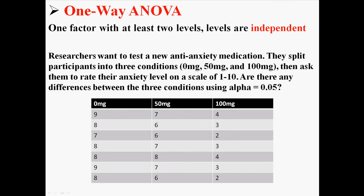They split participants into three conditions: 0mg, 50mg, and 100mg, then ask them to rate their anxiety on a scale of 1 to 10. Are there any differences between the three conditions using an alpha of 0.05? So here are the three conditions, there are seven people in each condition, and there are their scores.